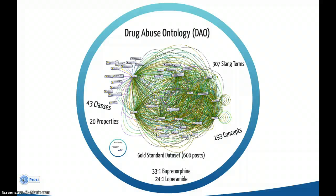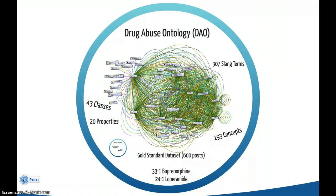In this gold standard, it was observed that for every instance of the surface form buprenorphine, there were 33 instances of slang terms used instead. Similarly, for loperamide, there was a 24-to-1 ratio of slang term use instead of the standard drug label. A knowledge of such slang-to-drug mappings is therefore critical for the retrieval of relevant content for data analysis and interpretation.